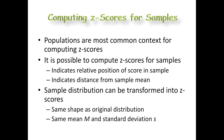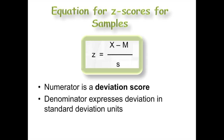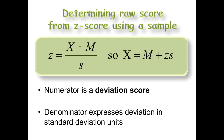Even though populations are the most common context for computing z-scores, you can compute a z-score for a sample. But instead of indicating an exact position, you're indicating a relative position within samples, and it indicates the distance from the sample mean instead of the population mean. The equation for z-scores for a sample is x minus M (capital M for the sample mean) divided by the sample standard deviation. The numerator is still the deviation score — how far from the mean is this one score — and the denominator is the standard deviation units. You can hunt down either a z-score or a raw score x using the two equivalent forms of the equation.